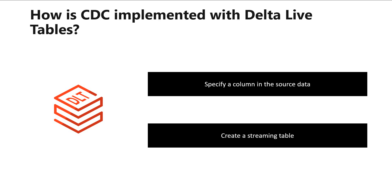How is CDC implemented with a Delta Live table? You must specify a column in the source data on which to sequence records, which a Delta Live table interprets as a monotonically increasing representation of the proper ordering of the data source. A Delta Live table automatically handles gaps in the source data and moves to the point of the interval window for SCD type 2 changes.